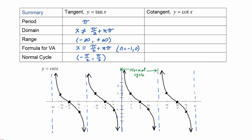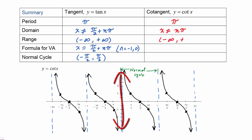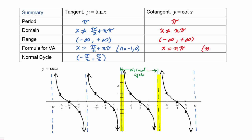For cotangent: the period is also pi; the domain is x cannot equal n pi; the range is negative infinity to positive infinity; the formula for vertical asymptotes is x equals n pi. To get the asymptotes of the normal cycle we plug in n equals zero and one, and the normal cycle occurs from zero to pi — that's the piece of the graph we chose to use.